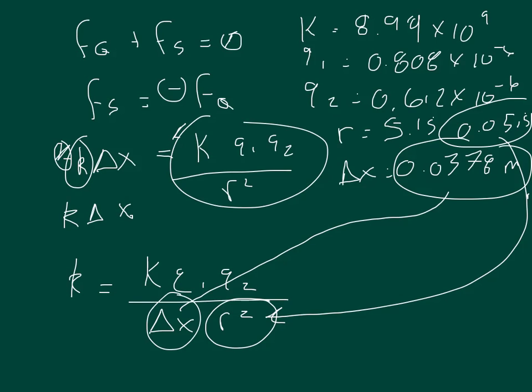So you just plug all that in, and you get the force constant of the spring, which is equal to 44.34 newtons per meter.